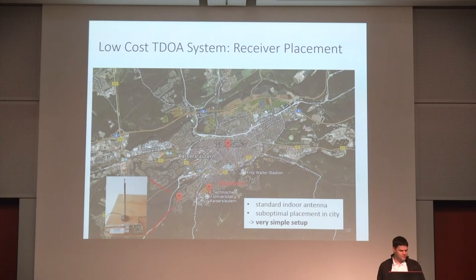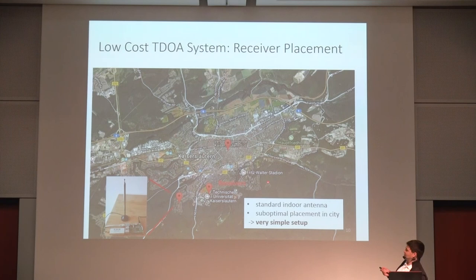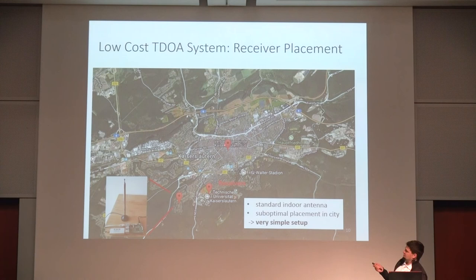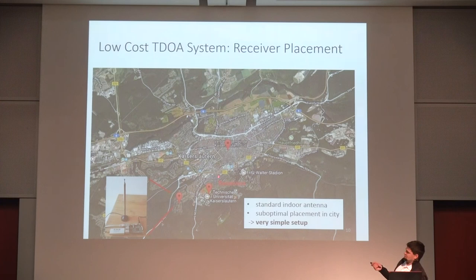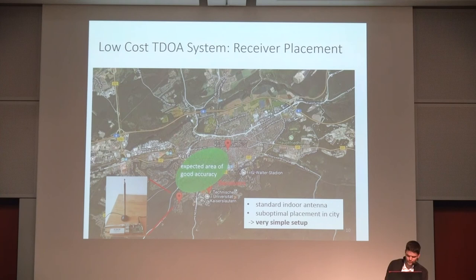Here we have a map of the city of Kaiserslautern, located in the southwest of Germany with approximately 100,000 inhabitants. Google has marked the main points of interest: the university, the soccer stadium, and the main cemetery. The red markers are the receiver placements. Ideally receivers should be placed further out, but that area is all forest with no fast internet connection available. So I came up with this sub-optimal placement, and at least in the central area the accuracy should be quite good.